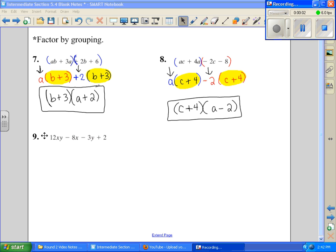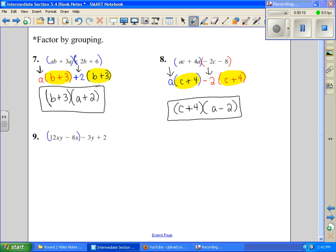All right, we're looking for a GCF, and there's nothing that all four of these terms have in common, so we want to try our factor by grouping, since it's at least four terms. I'm going to group the first two, group the second two.